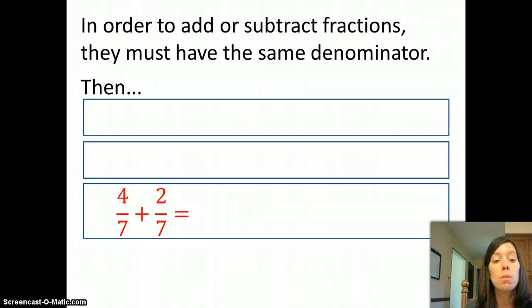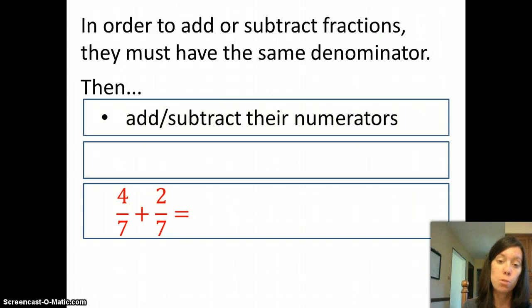So let's assume we're looking at a problem where the denominators are the same. Then all you have to do is add together the numerators or subtract the numerators, depending on what operation you're doing.